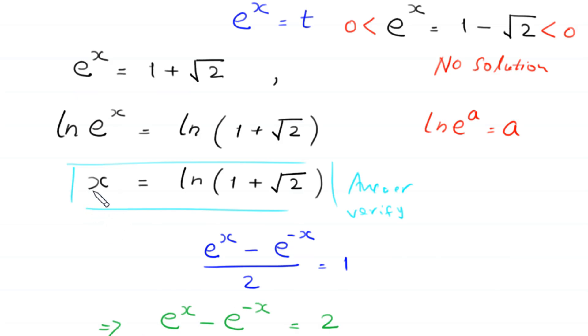So, this value of x, ln of 1 plus square root of 2, is a valid solution.